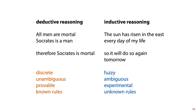For inductive reasoning, we get something like: the sun has risen in the east every day of my life, so it will do so again tomorrow. This is a more ambiguous statement. The proof is experimental, and the rules that tell us when inductive reasoning works are not known. For instance, whenever I visit a funeral, I'm never the person being buried. Therefore, the more funerals I visit, the more certain I should be that next time it won't be my funeral. Clearly, this is not the case — usually the opposite is true. But the structure of the reasoning is exactly the same. The problem of induction is that we cannot say for sure when this method fails and when it succeeds.